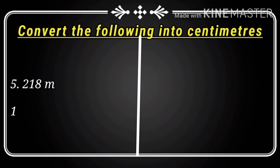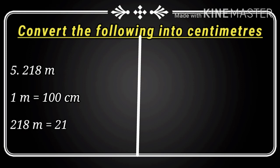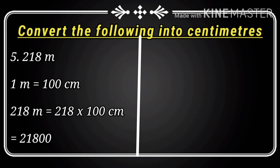Question number five: 218 meters. One meter equals hundred centimeters. 218 meters mein kitne centimeter honge? 218 multiplied by hundred, and the answer is 21,800 centimeters.